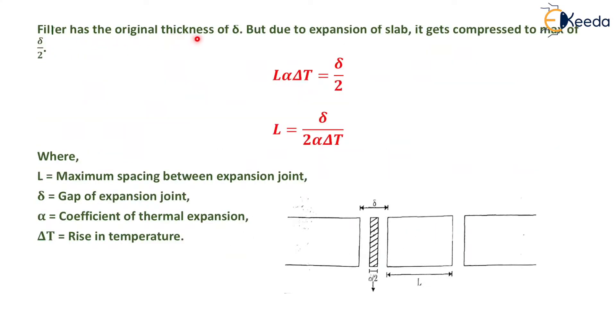Filler has the original thickness of δ, but due to expansion of the slab it gets compressed to a maximum of δ/2. So L·α·ΔT = δ/2, giving L = δ/(2α·ΔT), where L is the maximum spacing between expansion joints, δ is the gap of expansion joint, α is the coefficient of thermal expansion, and ΔT is the rise in temperature.